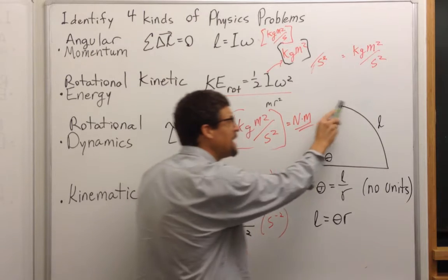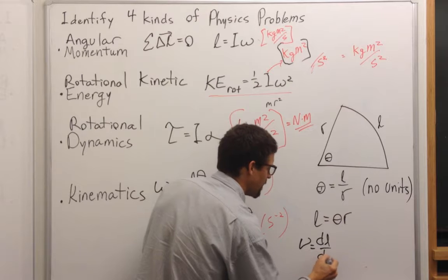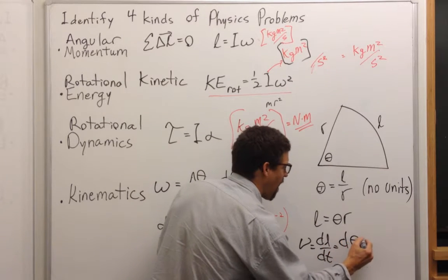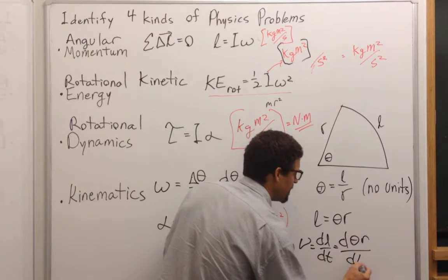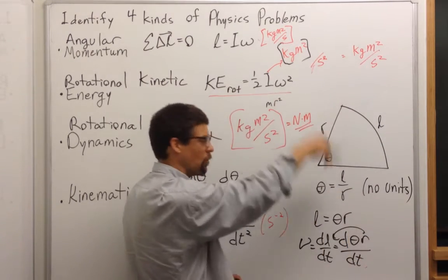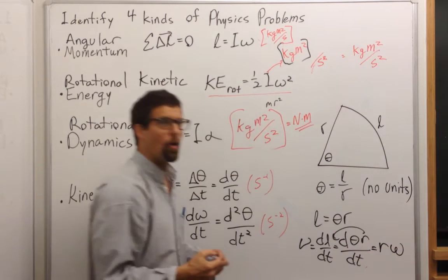Now the speed at which it travels is equal to dl dt. And so this would just be d theta r dt, right? But r is a constant. The radius doesn't change in a wheel. And so this would just be r d theta dt, which is r omega.